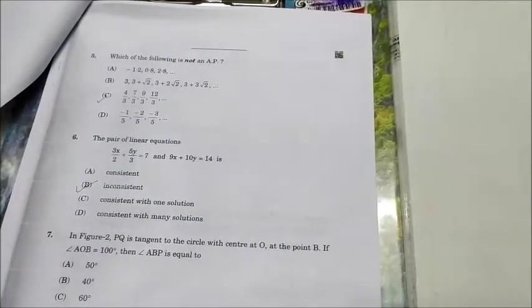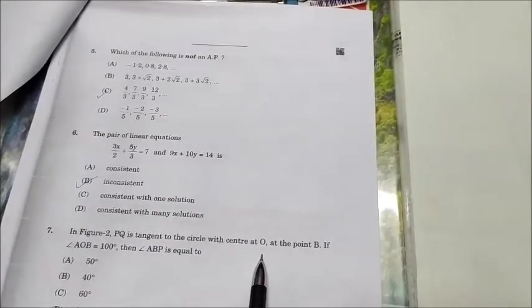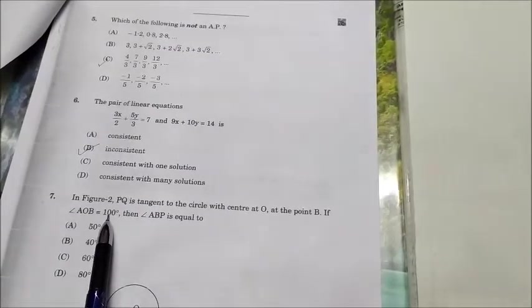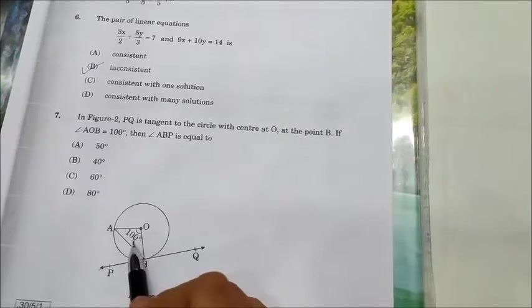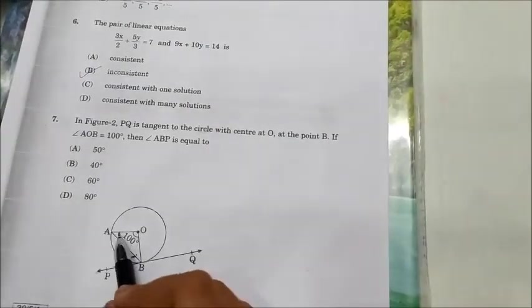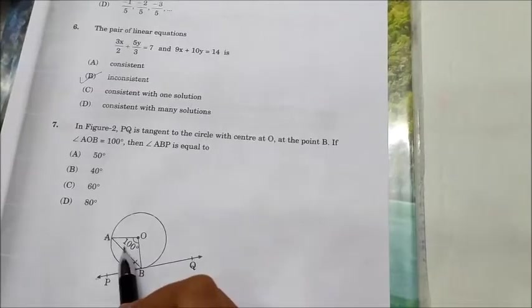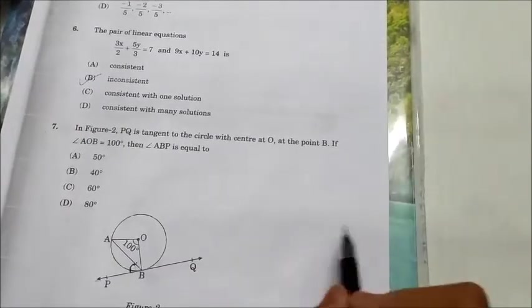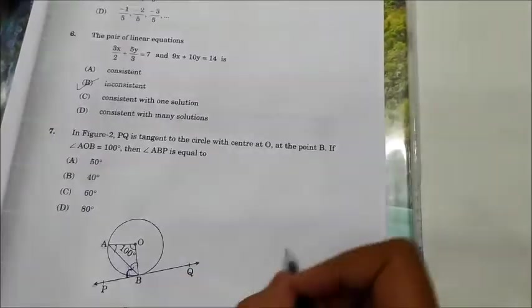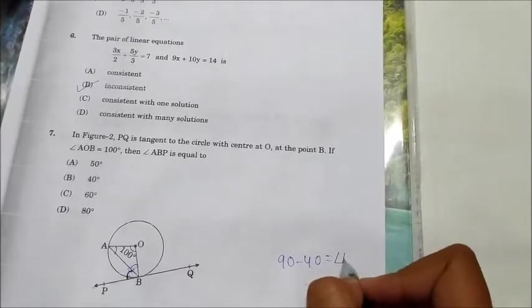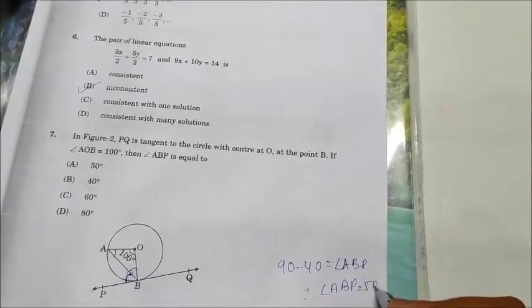Then question 7: In figure 2, PQ is a tangent to the circle with center O, and angle AOB = 100°. Then angle ABP is equal to... We need to find angle ABP. So if you can see, OB and OA they both are radius of the circle, means this is an isosceles triangle, means angle AOB will be equal to angle OBA. So 180 - 100 = 80. So these both will be 80/2, so this will be 40, this will be 40. And this is forming a tangent from point P, so this is 90°, means 90 - 40 = angle ABP. Therefore angle ABP = 50°. So the answer is A, 50°.